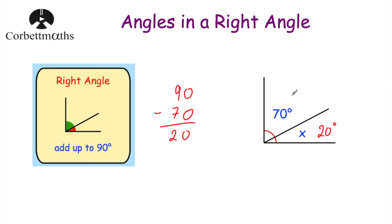We can check it's right by adding the two angles together. 70 plus 20 is equal to 90, and the angles in the right angle add together to give us 90 degrees. And that's it.